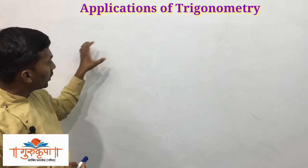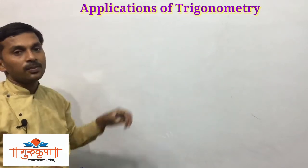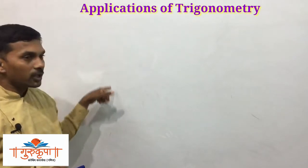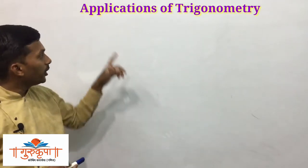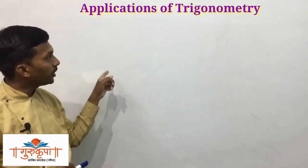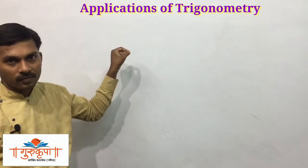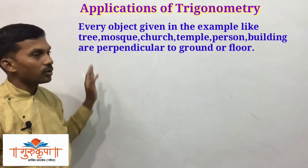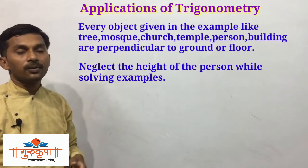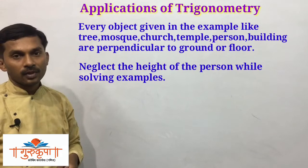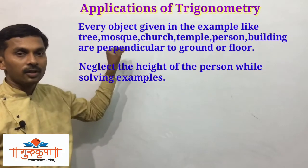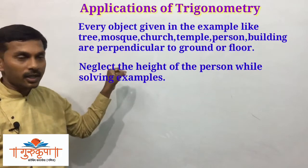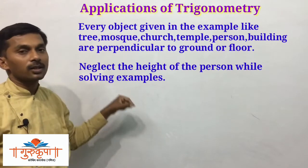When we take such situations through examples, we have to consider that any tree, temple, lighthouse, tower, or any object is perpendicular to the ground. That object is always perpendicular to the floor — whether it is a lighthouse, a pole, or a building. We have to consider that it is perpendicular to the ground.